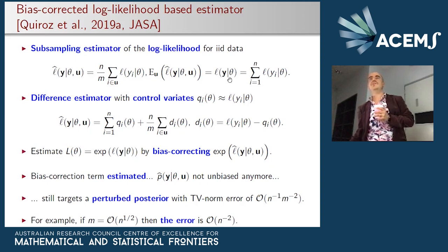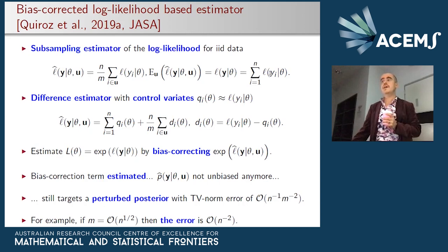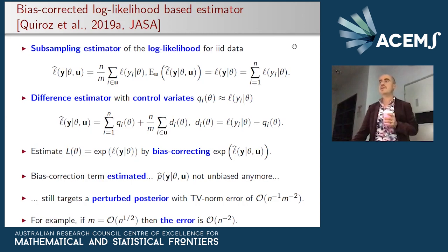Simple random sampling turns out to be a poor idea because the contributions to the sum vary tremendously between observations. This is well known in survey sampling — if populations vary a lot, simple random sampling is not efficient. So we took the difference estimator from the survey sampling literature and applied it in this MCMC setting.